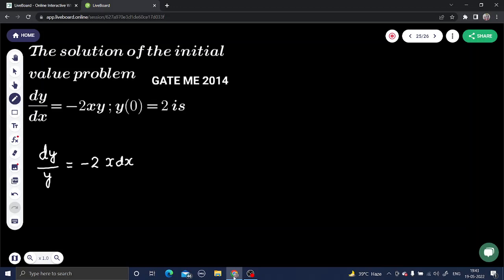We have separated the variables and we integrate both sides. dy by y integration is log y, we need to write mod, equals to minus x squared by 2 plus constant.